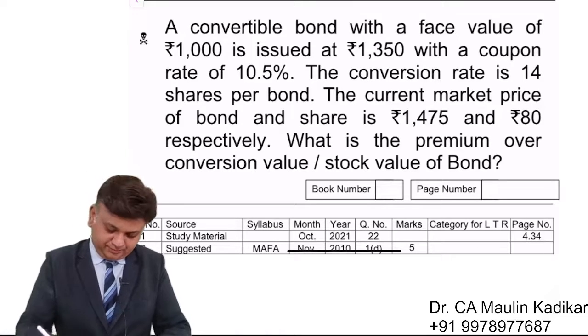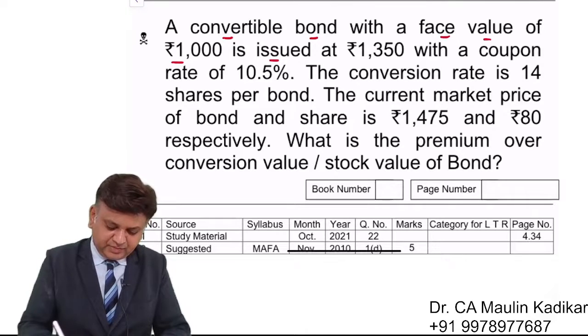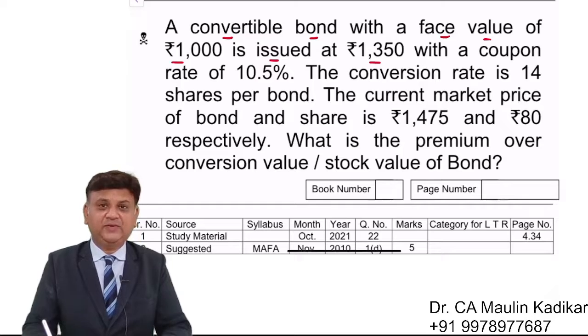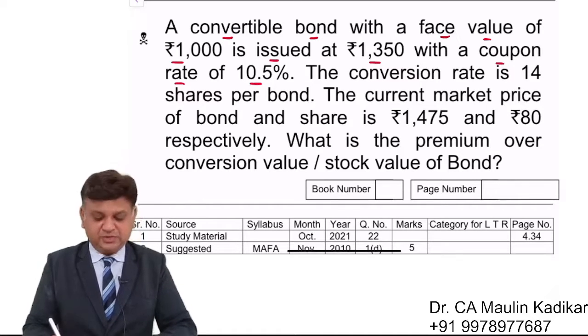Let us see the next question. A convertible bond with a face value of Rs.1000 is issued at the rate of 1350 with a coupon rate of 10.5%.